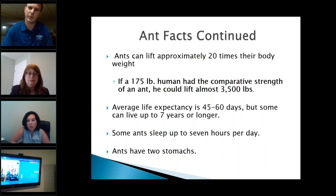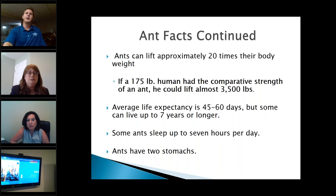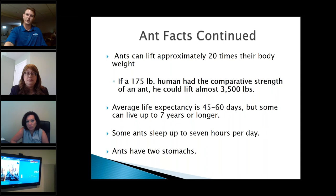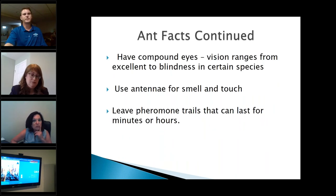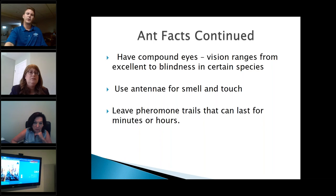Ants can lift approximately 20 times their body weight — if a 175-pound human had the comparative strength, he'd be lifting over 3,500 pounds. Average life expectancy is 45 to 60 days, though some can live up to seven years. Some ants sleep up to seven hours a day, and ants have two stomachs. They have compound eyes, and their vision ranges from excellent to blindness depending on the species. They use antennae for smell and touch, and they leave pheromone trails that can last for minutes or hours — those trails are how they know to travel in lines, just sniffing out a pheromone to know where to go.